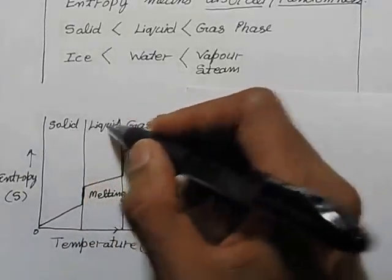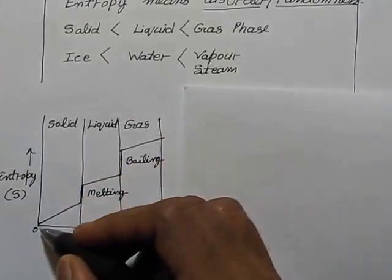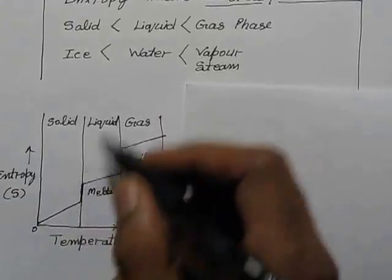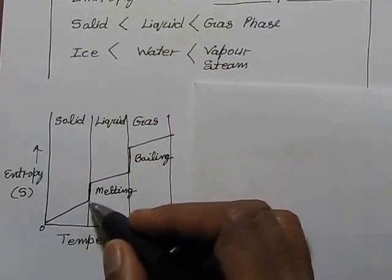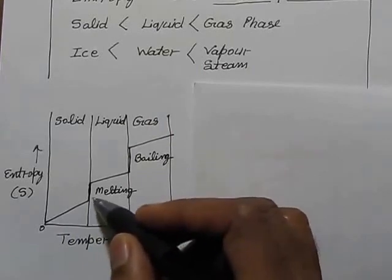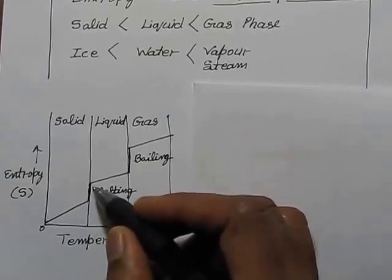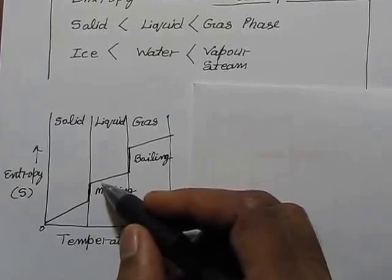There are three phases: solid, liquid, gas. If we increase the temperature of a solid or ice, it will start melting and at this phase it will melt into liquid.